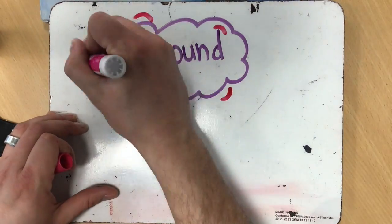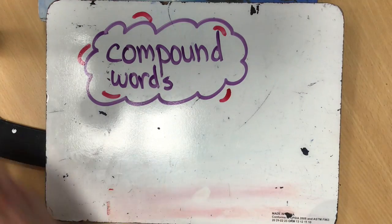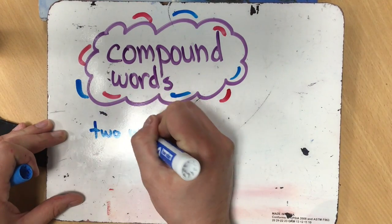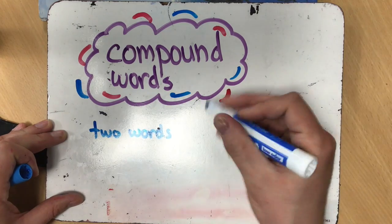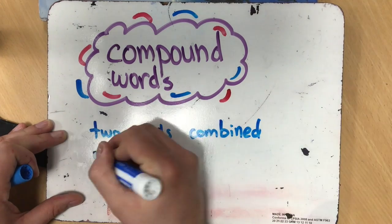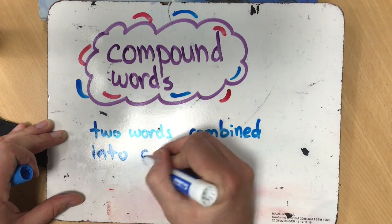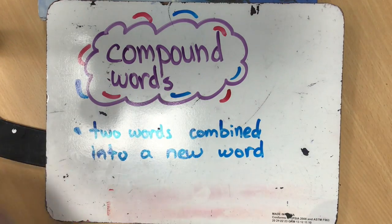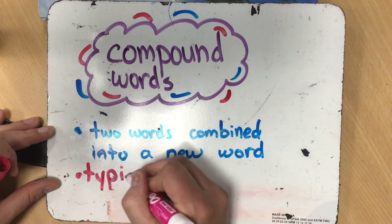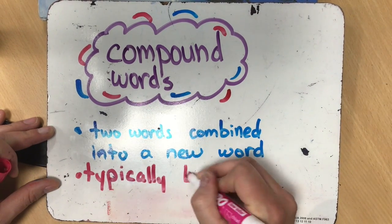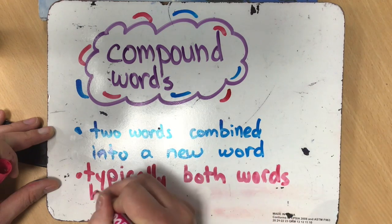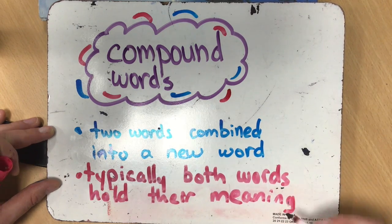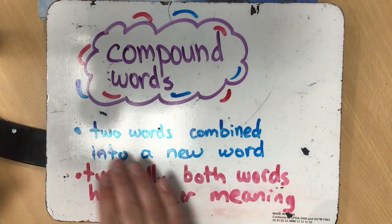This is not your first experience with compound words. You've done this before in first grade, second grade, third grade. A compound word, to review, is when you put two words together — when two words are combined into a new word. And typically when we have a compound word, both words hold their meaning, which means that the meaning of the new word is basically made up of the meaning of the two original words.